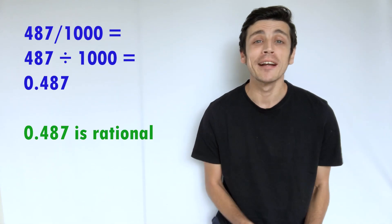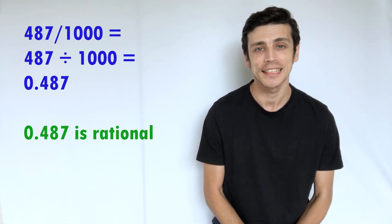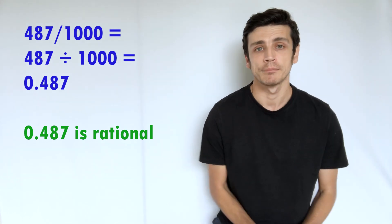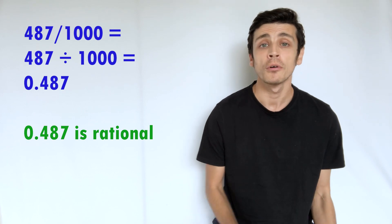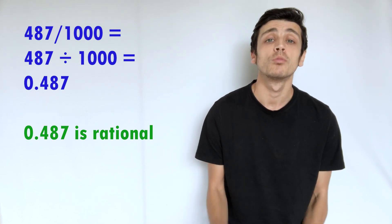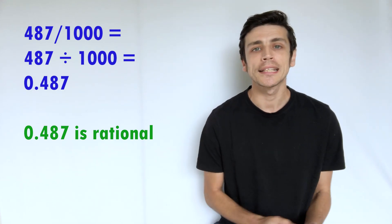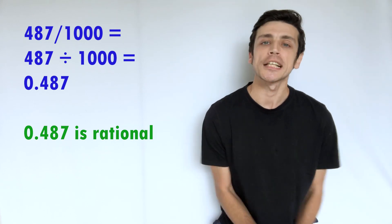So rational numbers can also be in the form of decimals as well. So if we take the number, let's say 0.487, what we can actually do is we can actually express this as a fraction. So we can divide this by a thousand. So if we have 487 over a thousand, so 487 divided by a thousand would give you 0.487. So it's still being expressed or it can be expressed as a fraction, so it is in fact still rational.